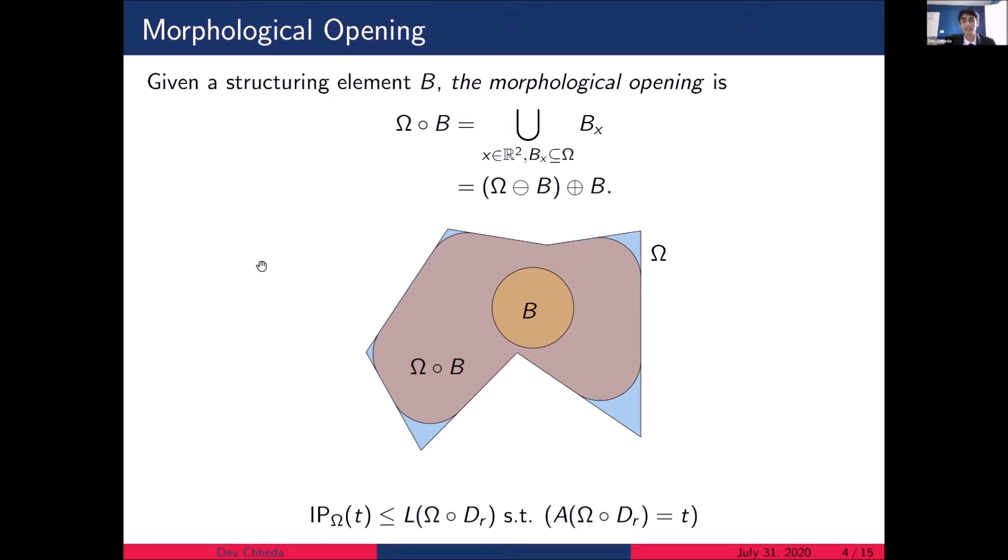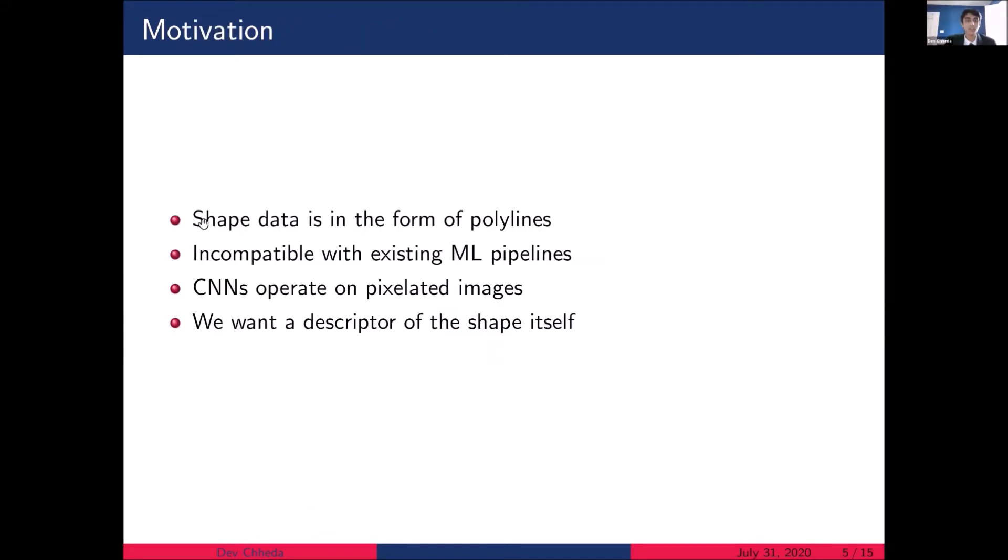So the first thing we might consider using the profile for is shape classification. And there's a few reasons why we are motivated to do this. First of all, shape data is in the form of polylines, that is a series of connected line segments. And this sort of data is incompatible with most existing machine learning pipelines. Instead, the most popular image classifiers use convolutional neural networks, but these operate on pixelated images. And ideally, we want a descriptor of the shape itself.